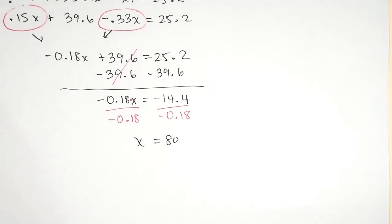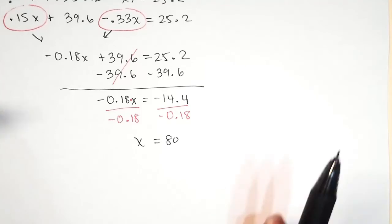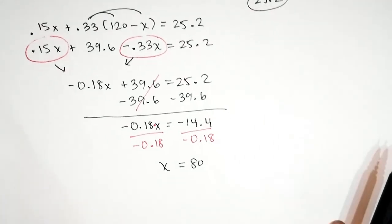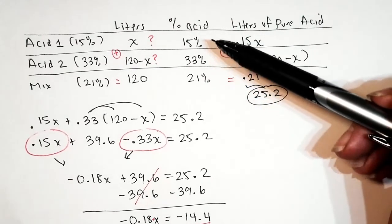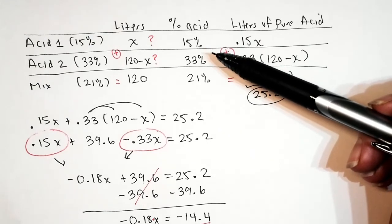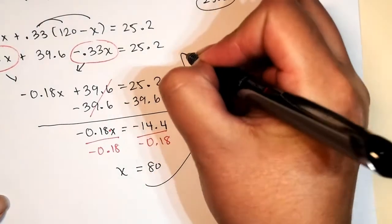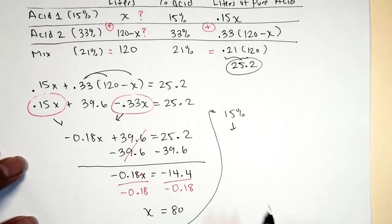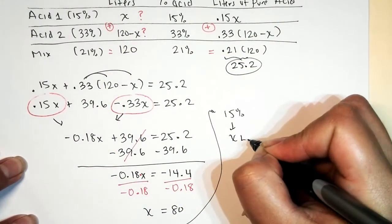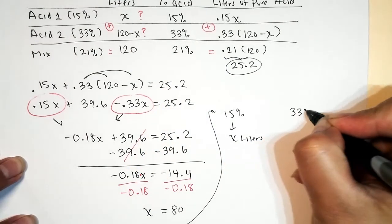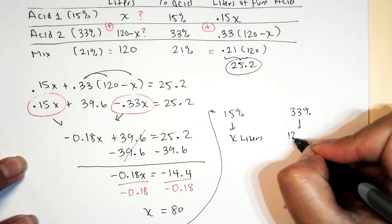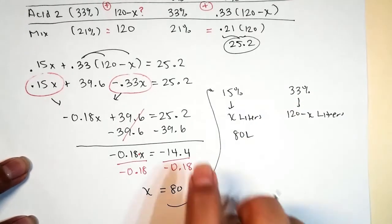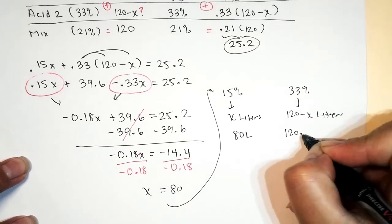The direction says form an equation and solve it — we did our equation and we solved it. Now we go straight to the answer in sentence form. The question was how much of each should he mix together. Of the 15%, we need x liters, and of the 33% we need 120 minus x liters. The value of x is 80, so 120 minus 80 gives us 40.